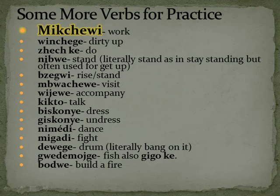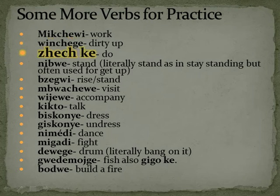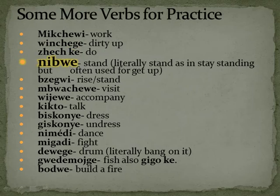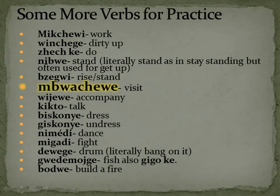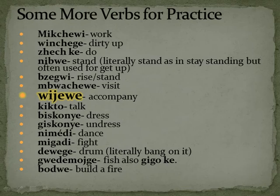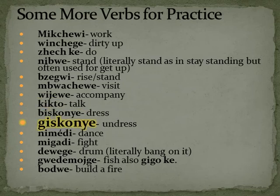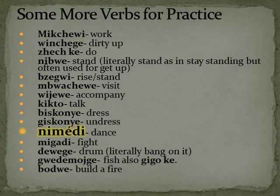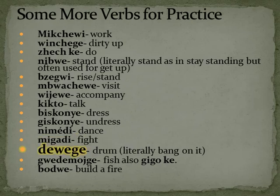Some more verbs for practice: Mikchwee — the verb to work. Winchge — the verb to dirty up. Jchge — the verb to do something. Nibwe — the verb to stand; literally it means 'stay standing,' but people often use it as 'rise up' as well. Bzgwee — to rise or stand. Mbwachwe — to visit; that M is kind of quiet. Wejwee — to accompany someone. Dewege — that sound of a heartbeat.